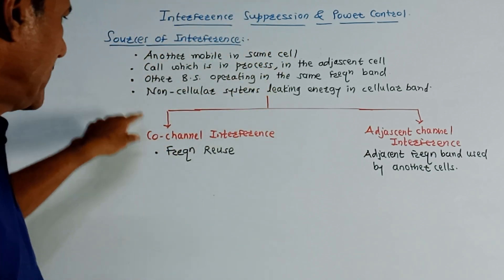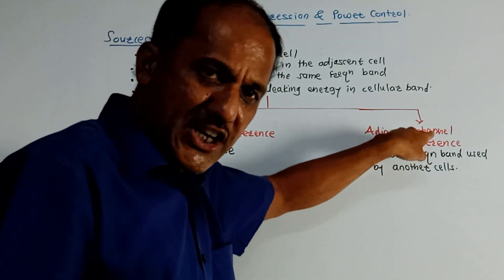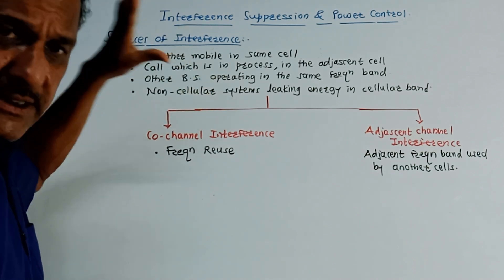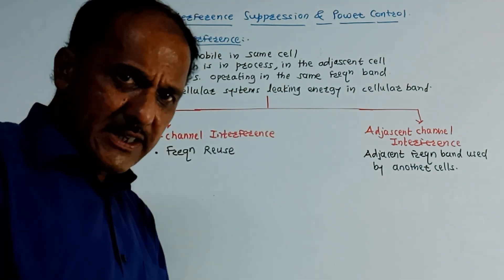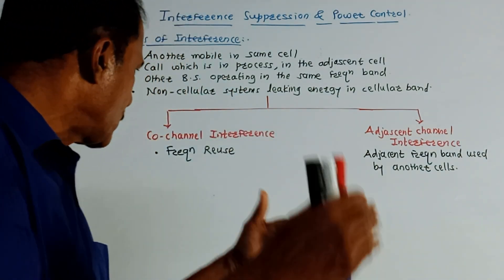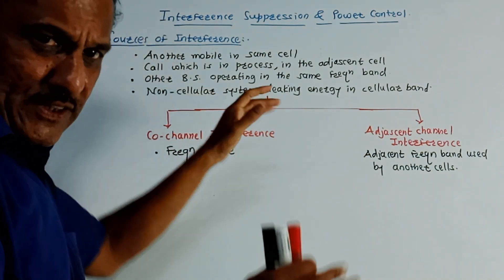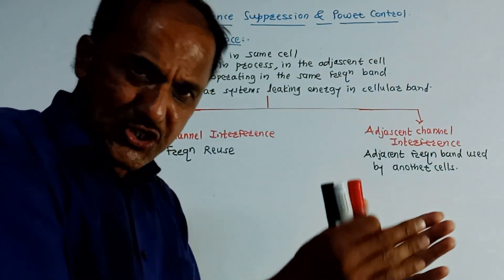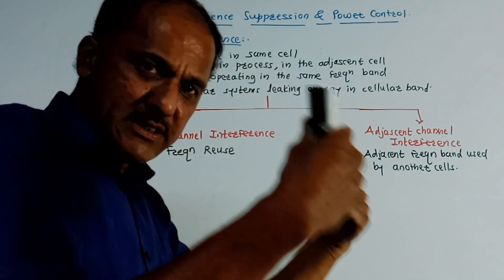Broadly, there are two types of interference: co-channel interference and adjacent channel interference. As far as co-channel interference is concerned, recall the frequency reuse technique — multiple cells use the same frequency, which may cause interference. Co-channel interference is the interference caused between two channels operating at the same frequency due to the frequency reuse technique.